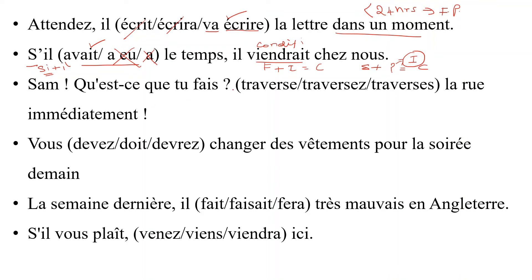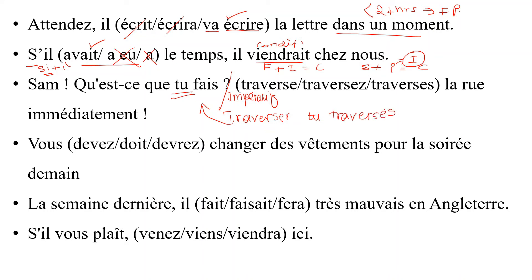Next: 'Sam — ' — the sentence starts with a verb, so it is imperative. The clue 'tu' is here. The verb is 'traverser', an -er verb. In the 'tu' present form it is 'traverses' with an 's'. But for the imperative with 'tu', drop the 's'. So 'traverse' without the 's' is the correct answer.